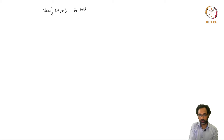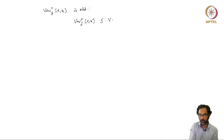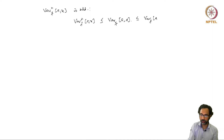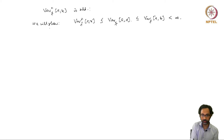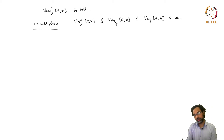I am going to show that var⁺(f, [a, x]) is less than or equal to the total variation of f over [a, x], and this is less than or equal to the total variation over [a, b], which is finite because f is of bounded variation. So we will show this — it is not very difficult.